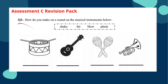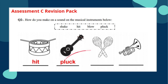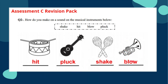Question two: how do you make a sound on the musical instruments below? The words are shake, hit, blow, and pluck. For a drum to make a sound, we hit it. Guitar is a string instrument — it makes a sound when the string is plucked. Maracas need to be shaken to make a sound. A trumpet makes a sound when we blow it.